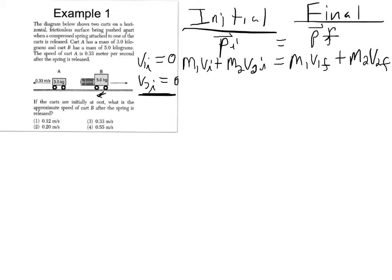Okay. And now the problem wants to know what is the approximate speed of cart B after the spring is released. So let's call this cart one and this one two. So cart A will have V1s and cart B will have V2s.